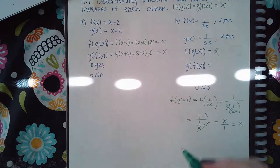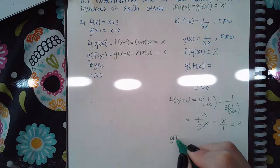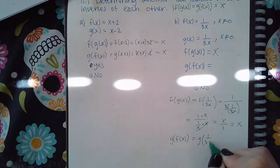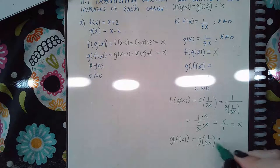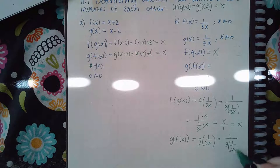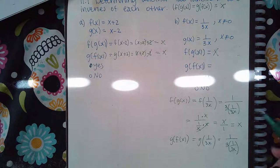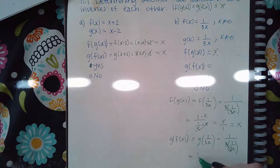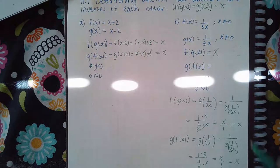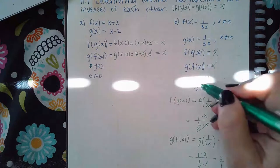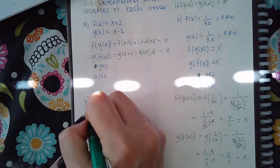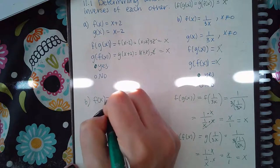Now if I do the reverse, g(f(x)), well f(x) is one-third x and g of this is one-third times one-third x. We've already seen this expression so we already know what's going to happen, we end up with x. So we got x again so we say yes.